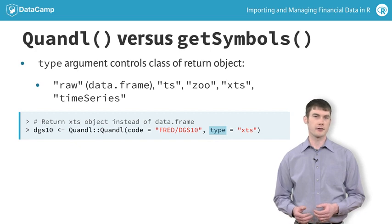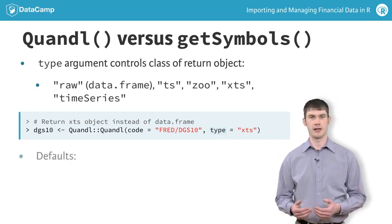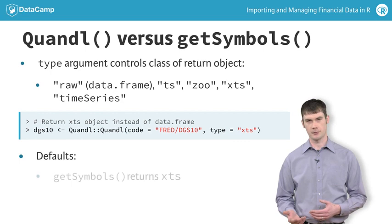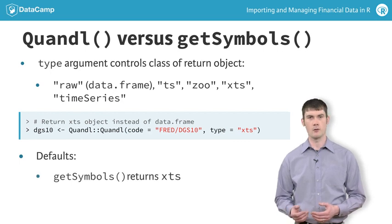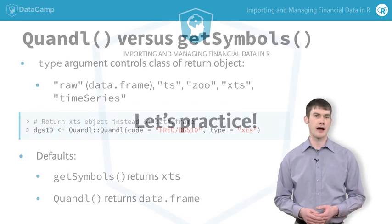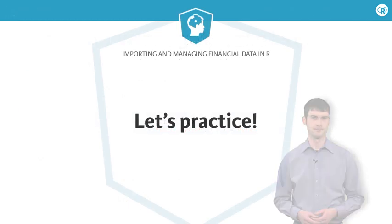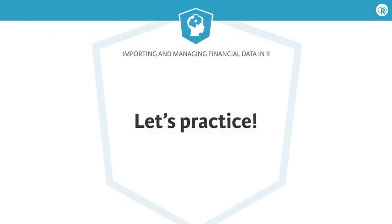You can control the class of the object it returns by changing the type argument. Another difference between Git Symbols and Quandl is that Git Symbols returns an XTS object by default, while the Quandl function returns a data frame by default. Now it's your turn to practice using the Quandl function.